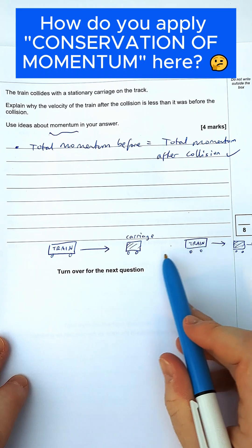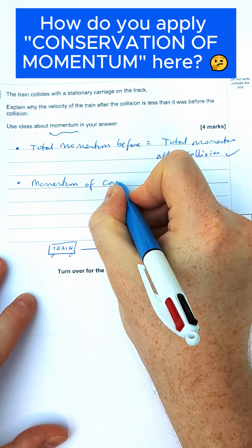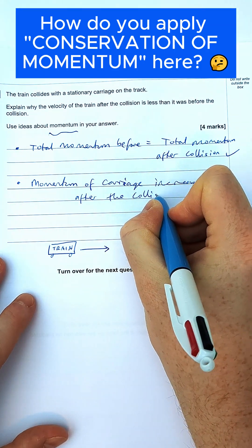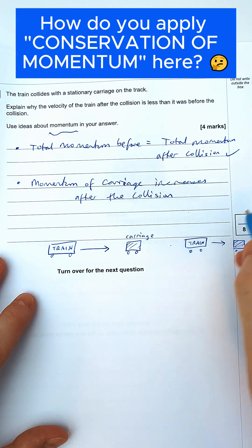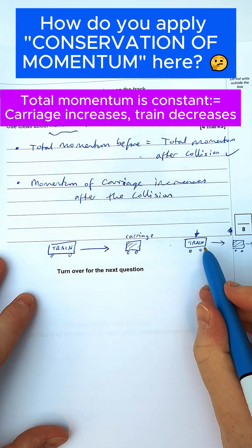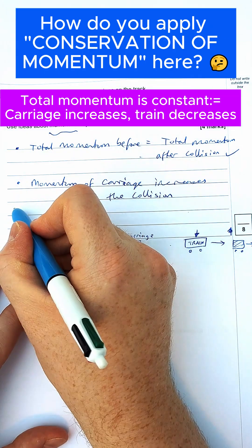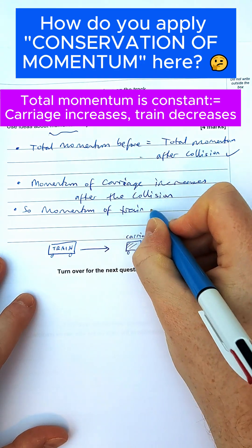If the momentum of the carriage goes up, let's write that down. The momentum of the carriage increases after the collision because it's now moving. That means if the momentum of the carriage has gone up after the collision, and the whole thing has to be the same before and after, the momentum of the train has to go down. So the momentum of the carriage increases, therefore the momentum of the train must decrease.